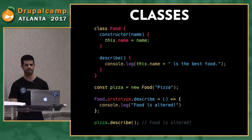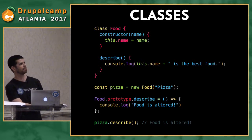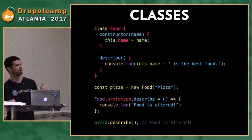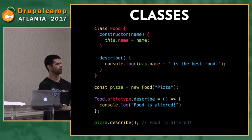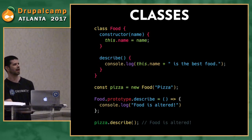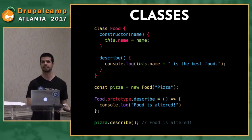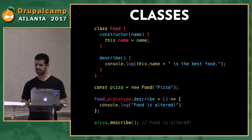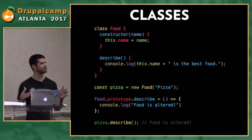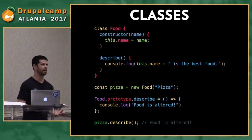Here's an example showing it's not a true class: after instantiating pizza from food, if I change food's prototype describe method, calling pizza.describe gives the altered version, not 'pizza is the best food.' That's because pizza is not truly independent of food — changes still affect the original class after instantiation. It's not a true class; it still follows the prototype chain.